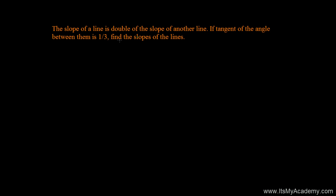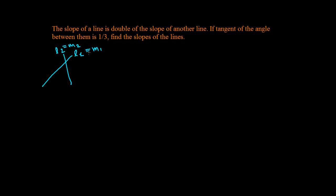We have another problem here: the slope of one line is double the slope of another line. If the tangent of the angle between them is 1/3, find the slopes of the lines. So we have two lines, l1 and l2. If l1 has slope m1 and l2 has slope m2, then m1 = 2m2.